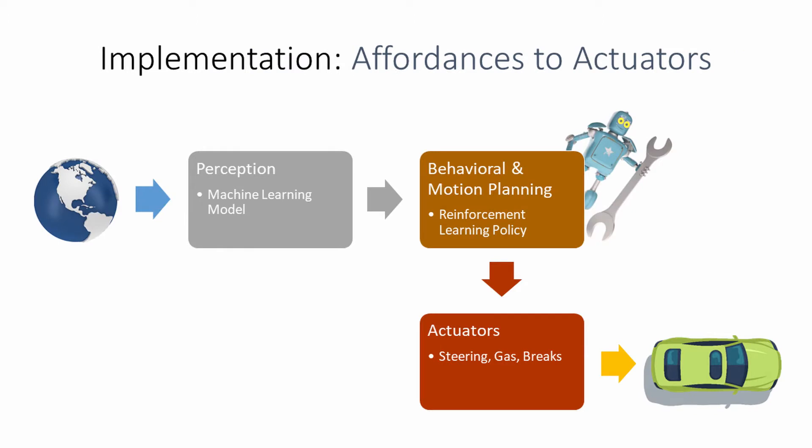In the implementation of the advanced driver assistance system, we can split the processing pipeline into three steps. First, a perception module processes sensor input from cameras and other systems. This could be implemented by a supervised machine learning model. The output is abstract state information such as speed, position, and distance to the obstacle — also called affordances.